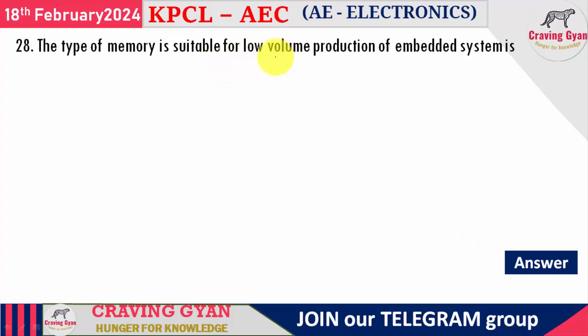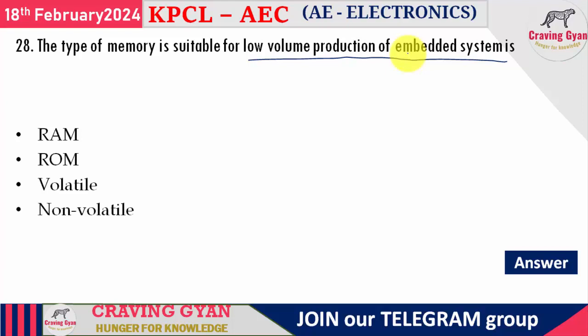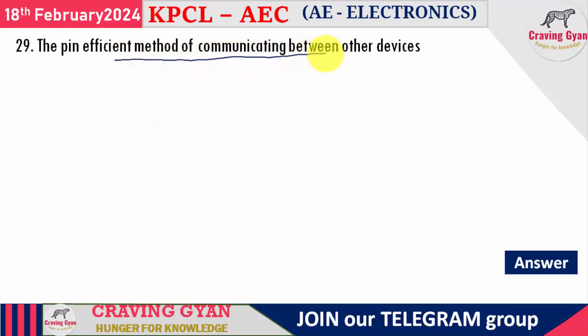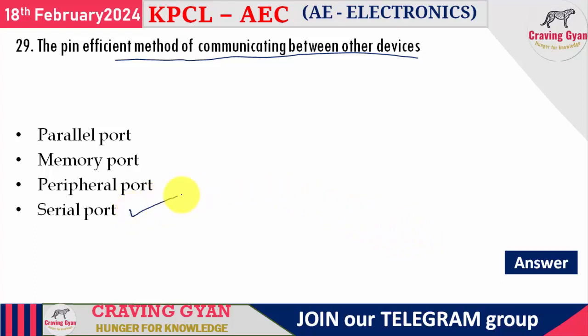28th question: the type of memory suitable for low volume production of an embedded system. Options are RAM, ROM, volatile memory, and non-volatile memory. The answer is non-volatile memory — consider a calculator, it uses non-volatile memory of a low size. Option D follows. 29th question: the pin-efficient method of communicating between devices is serial port — example RS-232. Option D follows.